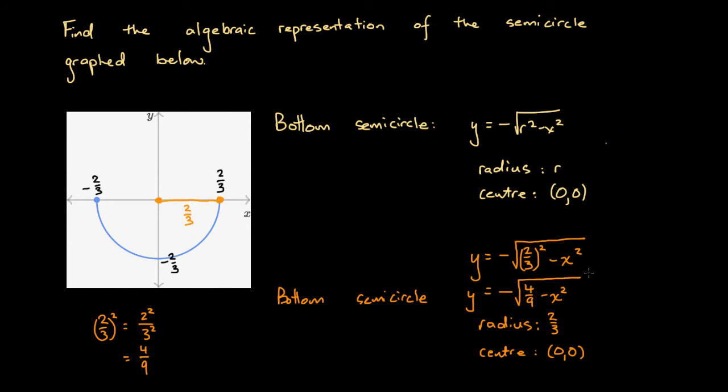So whenever you face a graph, and you've got to try and find the algebraic representation of it, the best way to do it is to think of how a semicircle is defined, and then substitute the specific radius for r in the algebraic form of a general semicircle. And then you'll be done.